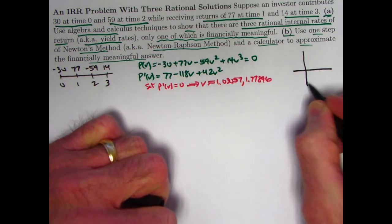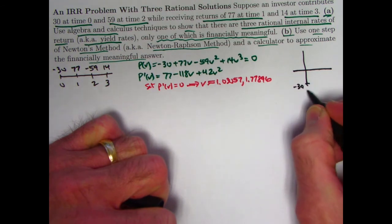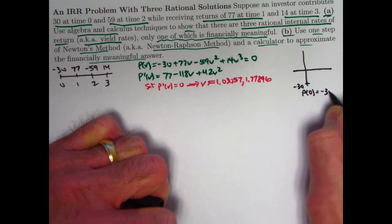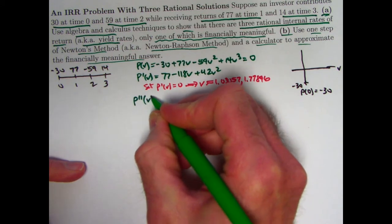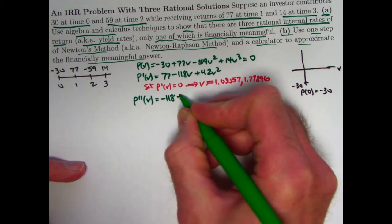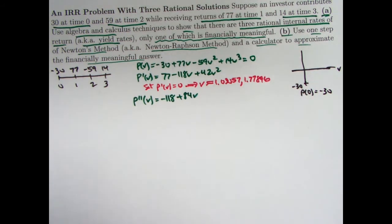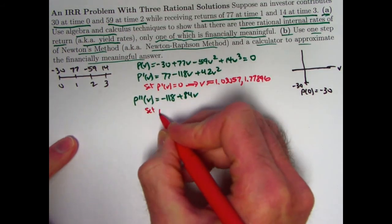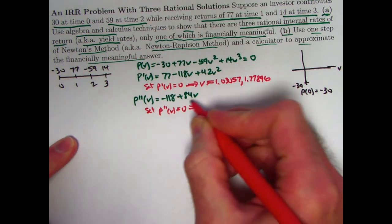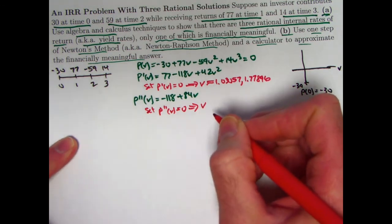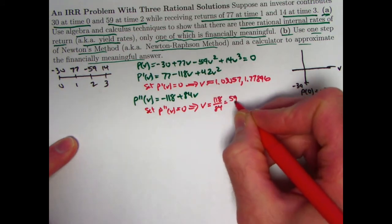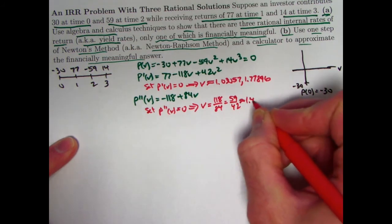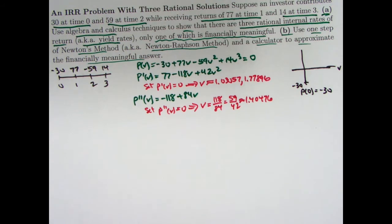They end up being approximately 1.03057 and 1.77896. So you should check that on your own. Those are the two critical points. It will turn out this will be a maximum and this one will be a minimum, which shouldn't be surprising since the graph of the cubic having a positive leading coefficient for v cubed should look like that. In fact, we can start to make the graph. You can also see that p(0) is negative 30, so that's the vertical intercept. Before we plug in some other numbers, let's also calculate the second derivative to find our inflection point.